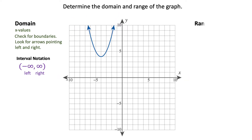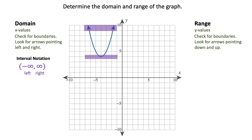Let's look at the range on this graph. If the domain was the x values, your range is going to be your y values. Again you're going to check for boundaries and look for arrows pointing down and up. This graph has a clear bottom — there are no arrows pointing down, but we do have two arrows pointing up. Looking at the bottom of the graph, where is it resting on the y axis? It is at a y value of 4; the bottom sits on positive 4 on the y axis.